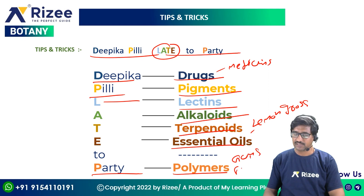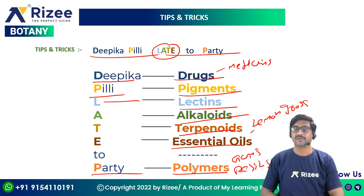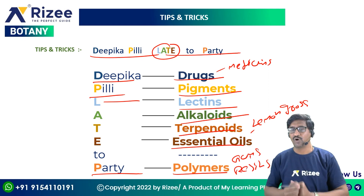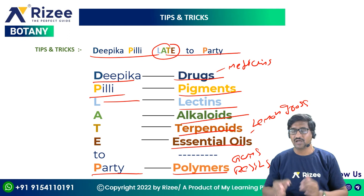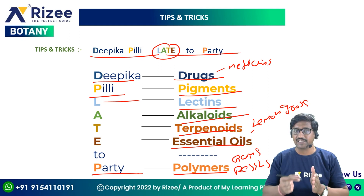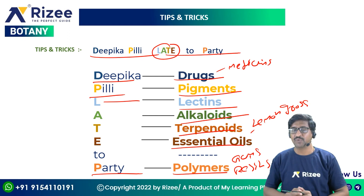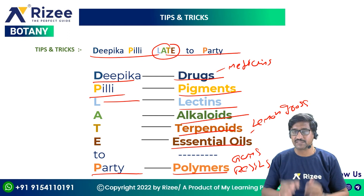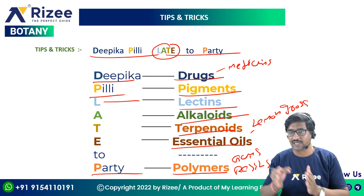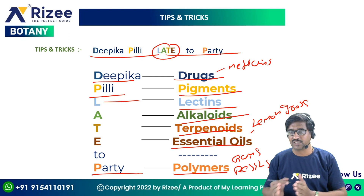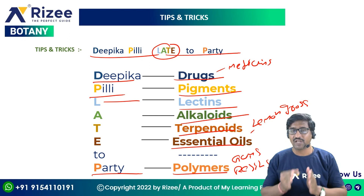The last part — Polymers — refers to Gums and Resins. So that completes the simple tip and trick for secondary metabolites, which are commonly asked in exam questions.